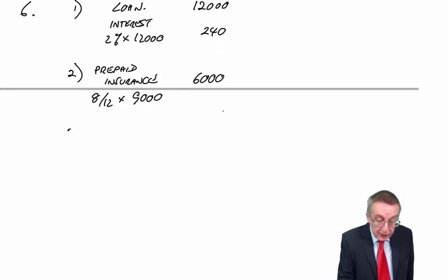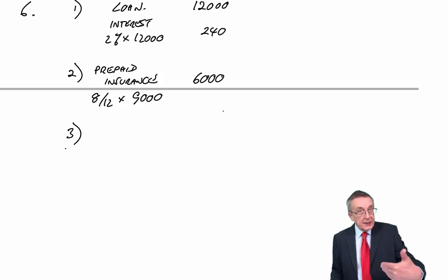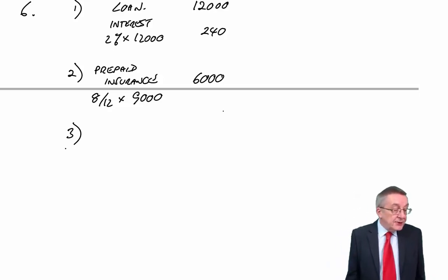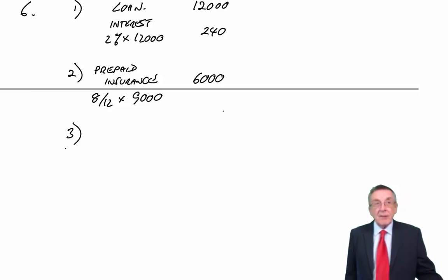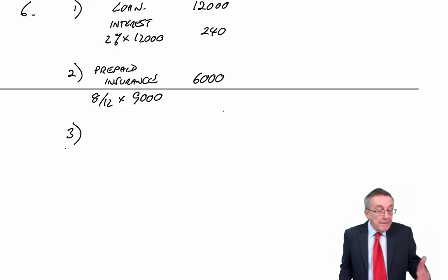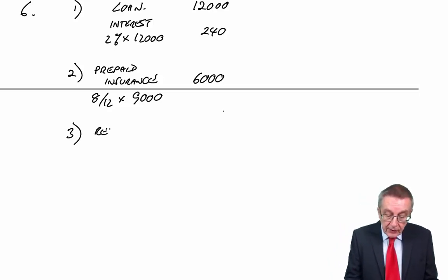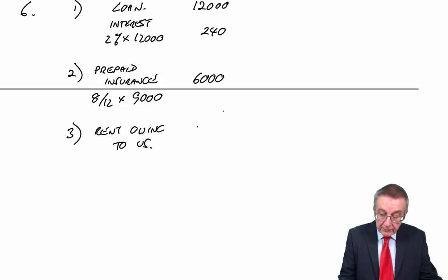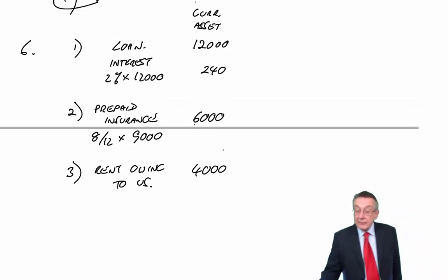Unfortunately we're still not there yet — number three. In January X6, which is next year — remember our year ends December X5 — we received rent from a tenant of £4,000, covering the six months to December. We didn't receive it until January, but we'd earned the money during the six months to December. So it was income of our year. At the end of December, we must have been owed the rent — £4,000 owing to us. If it's owed to us, it's a receivable, a current asset. So in fact, they're all current assets.